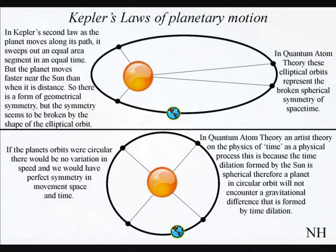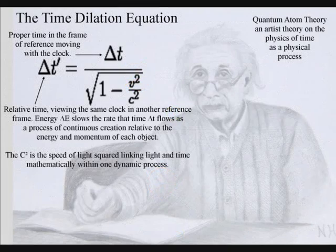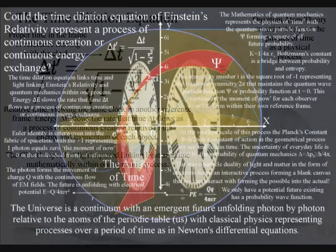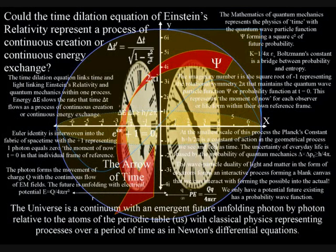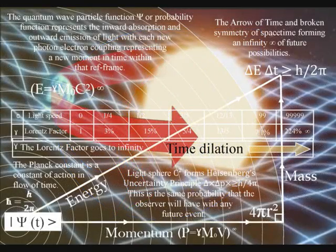If the planets' orbits were circular, there would be no variation in speed and we would have perfect symmetry in space and time. This is because, as a process of continuous creation, energy slows the rate that time flows, forming the time dilation of Einstein's relativity, which is formed by the sun's spherical mass. Therefore a planet in circular orbit would not encounter a gravitational difference and would have constant speed.